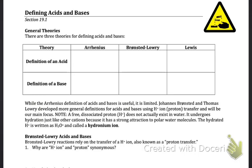Let's talk about acids and bases. From the section 19.1 reading, there are three general theories for defining acids and bases. The first is the Arrhenius theory. According to Arrhenius, an acid is anything capable of producing hydrogen ions — a positive hydrogen ion behaves as a cation, so we recognize an acid by hydrogen in the cation position. A base is any substance capable of producing hydroxide ions, seen in the anion position — such as sodium hydroxide.